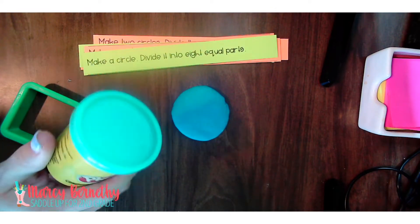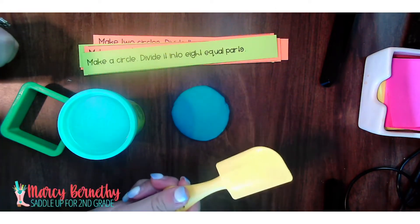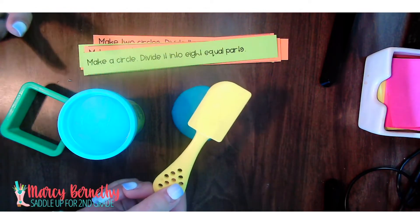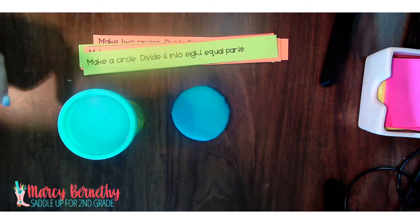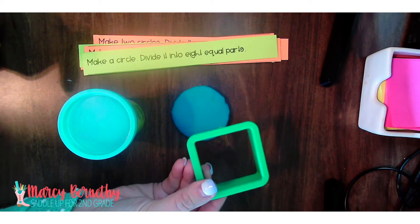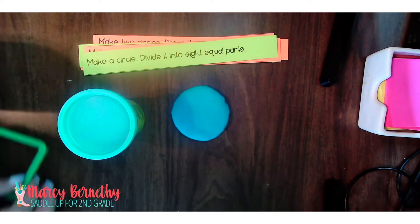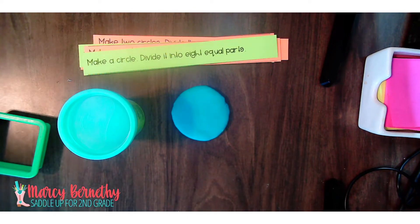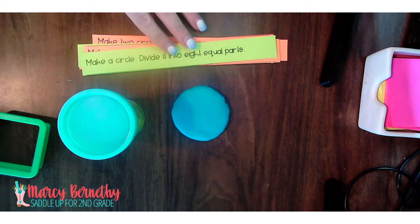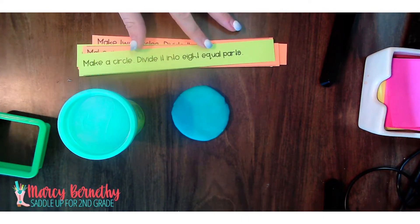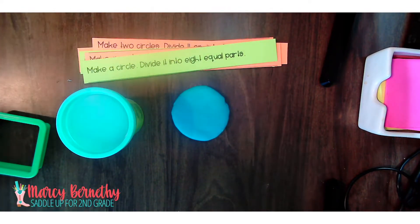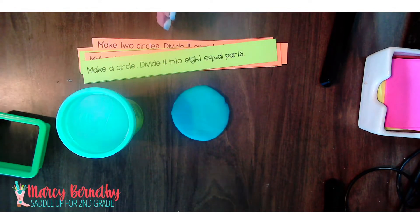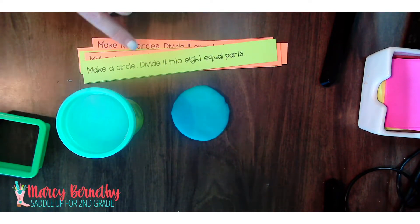Each kid is going to need a can of Play-Doh and something to divide their shapes with, like a Play-Doh tool or a simple plastic knife. If you want to get fancy, you can use pre-made cookie cutters so students can make various shapes, or just have them use their tool to form and create their own shapes. If doing this whole group, I would have the class do the same activity, but in a small group setting I would more than likely give them a different task strip.